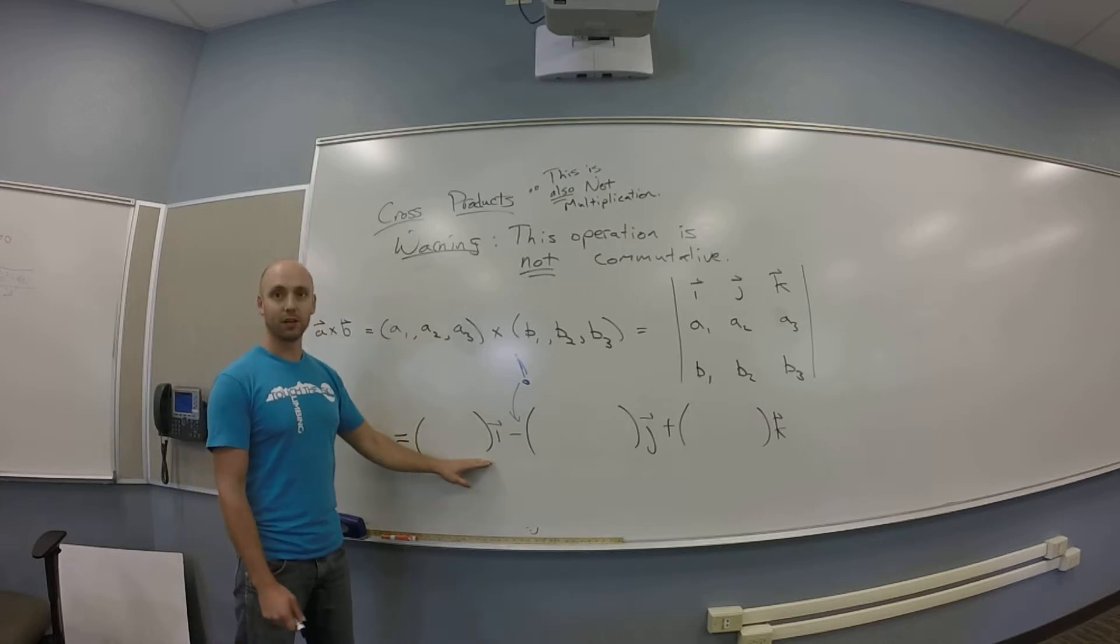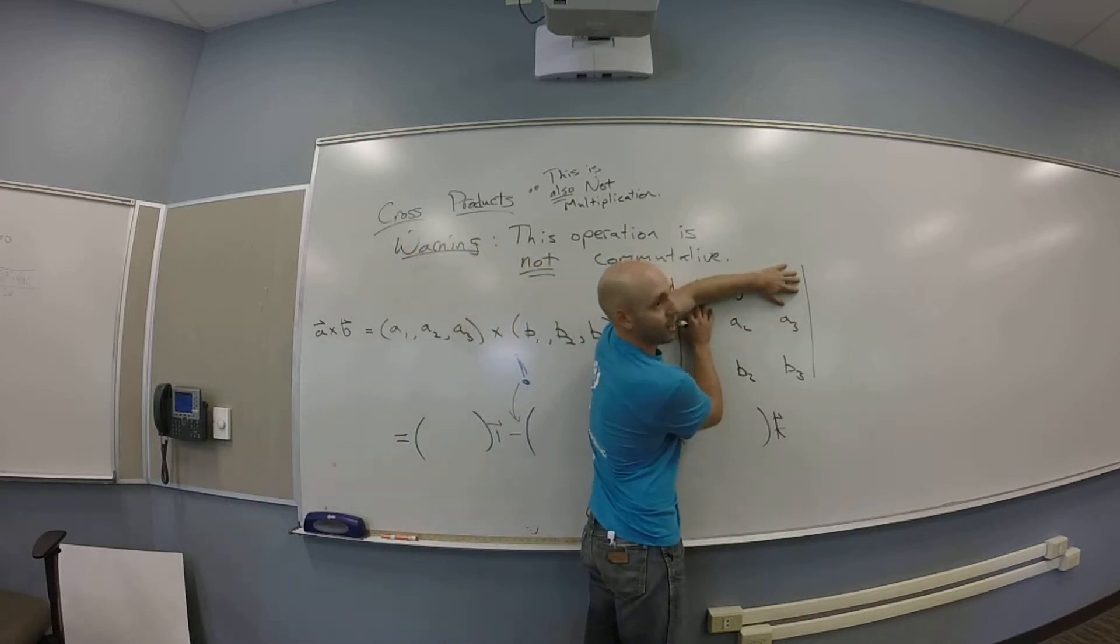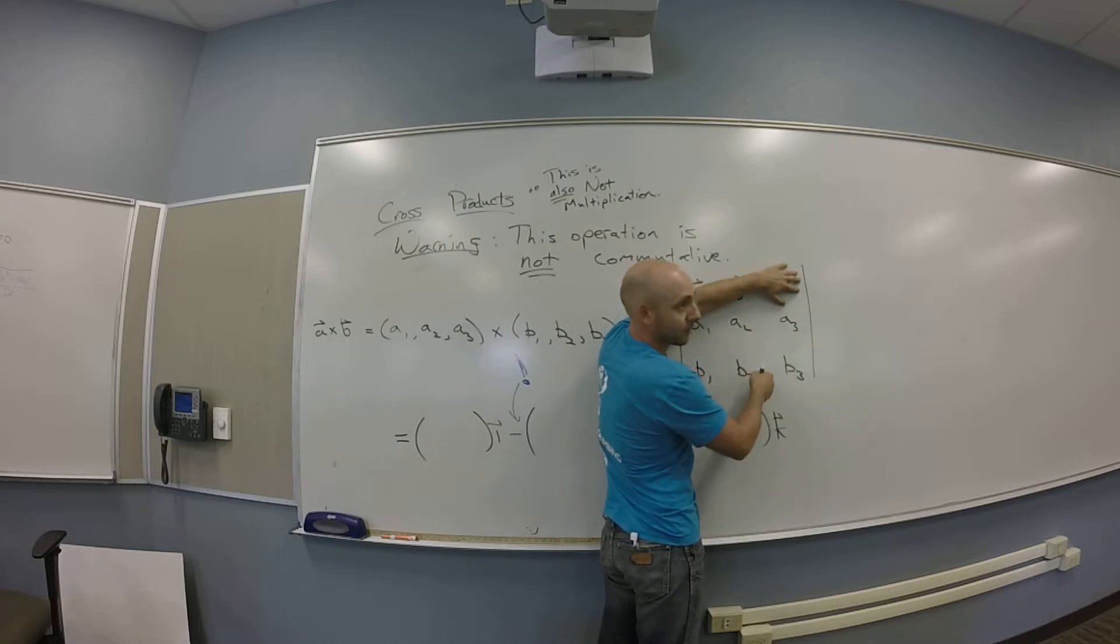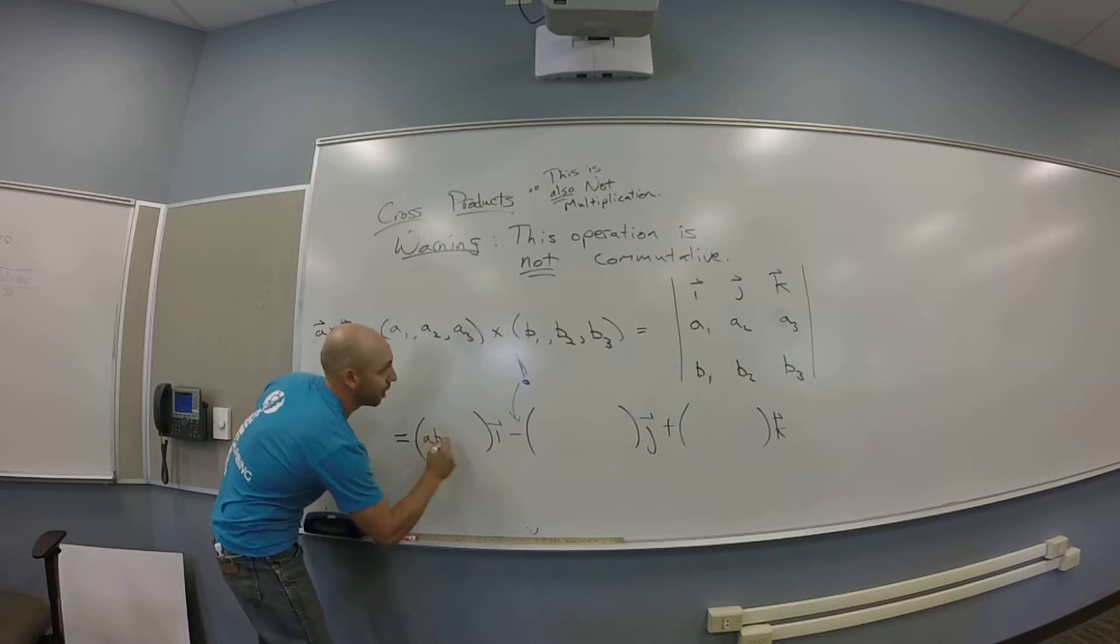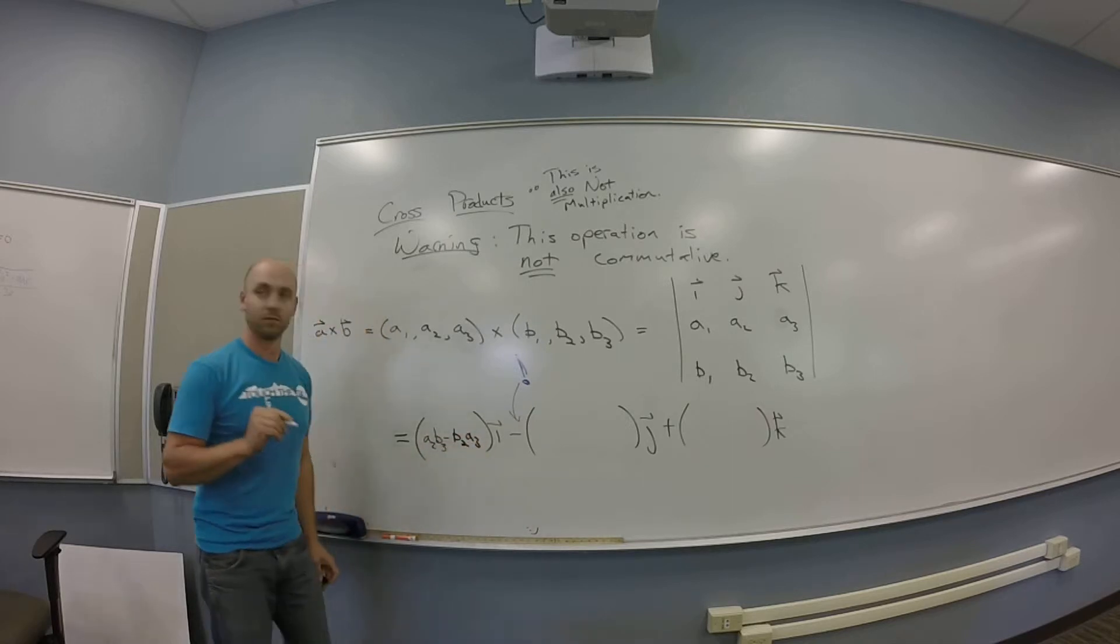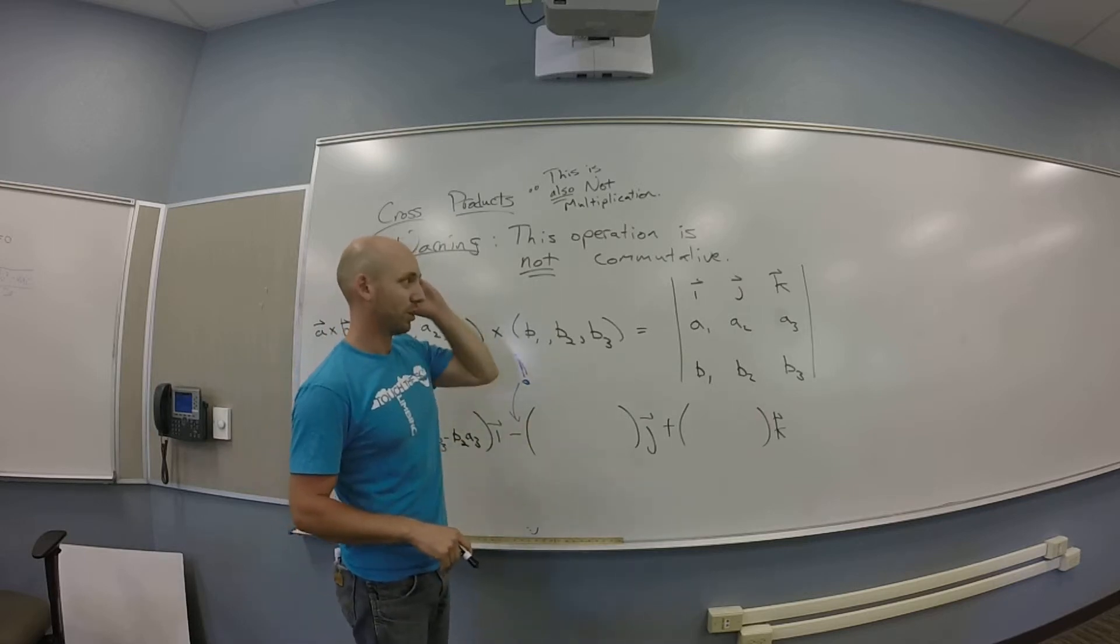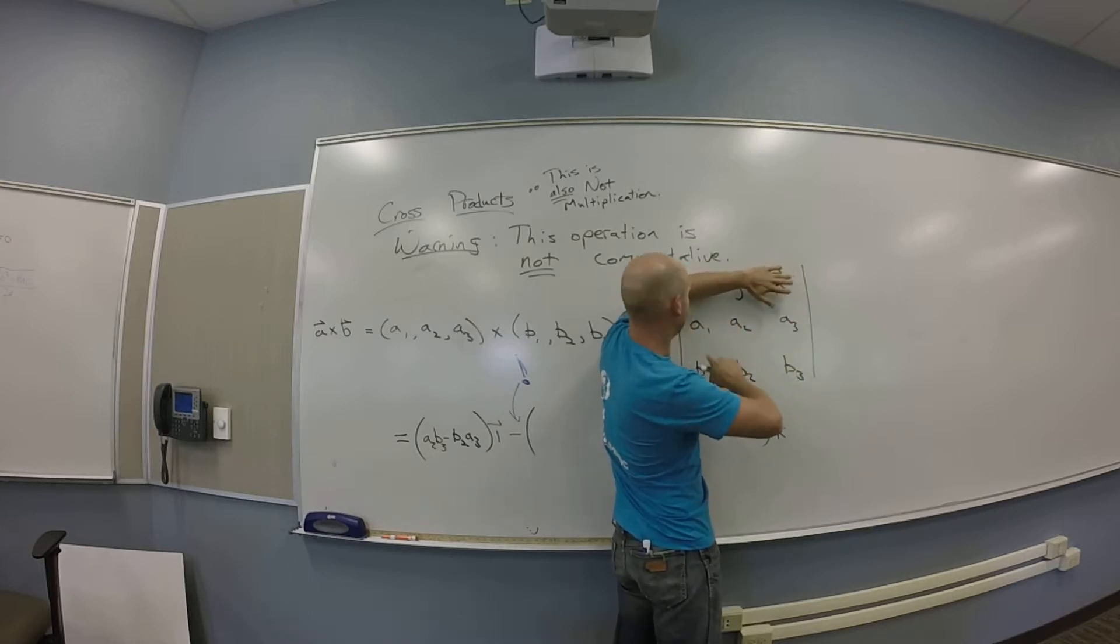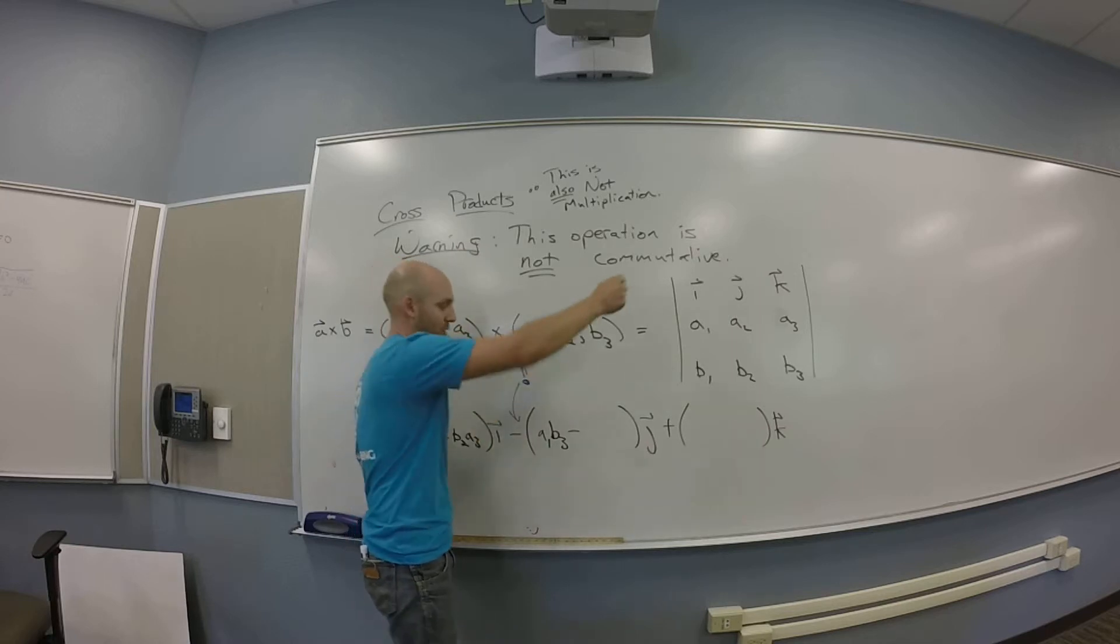So, in the first box here, this first set of parentheses on the i, you cover up the row and the column that contain i. And then make this little cross-calculation. So, I've got these covered up. So, I'm going to do this minus that. So, I'm going to do A2B3 minus A2B3 minus B2A3. You're going to do that same cross thing. So, you're going to get A1B3 minus what? B1A3.